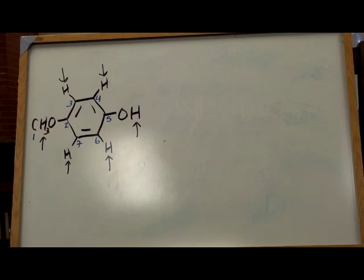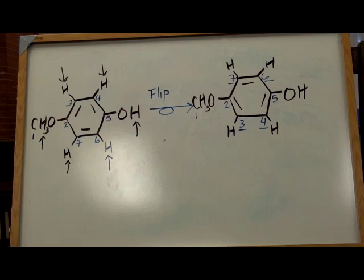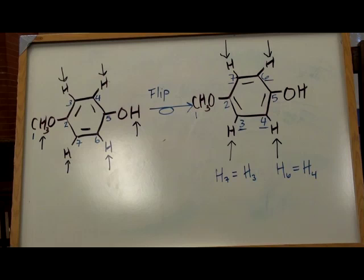Now we must look for the possibility of equivalent hydrogen groups. To do this, we must look at the symmetry of the aromatic. If we look at the molecule from a different perspective by flipping it over, we see that hydrogens 3 and 7 are equivalent to each other, and hydrogens 4 and 6 are also equivalent to each other. This shows that the four hydrogens attached to the aromatic can be grouped into two non-equivalent hydrogen groups.